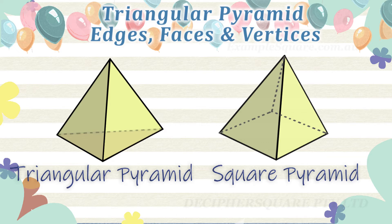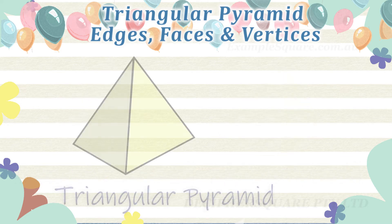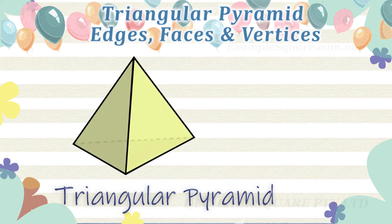Different types of pyramids may have different numbers of faces, edges, and vertices. A triangular pyramid has four faces.